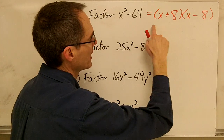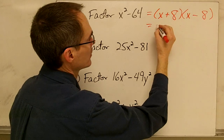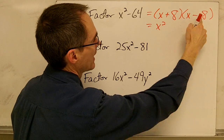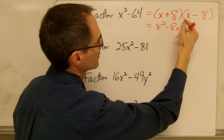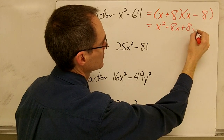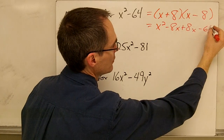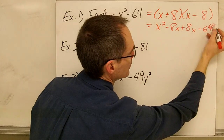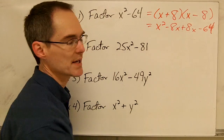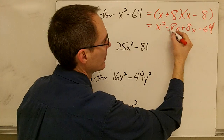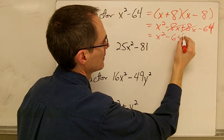We can check using FOIL: first terms x times x gives x squared; outer terms x times negative 8 gives negative 8x; inner term gives positive 8x; last terms positive 8 times negative 8 gives negative 64. The two middle terms, negative 8x and positive 8x, cancel each other out, and we're left with x squared minus 64.